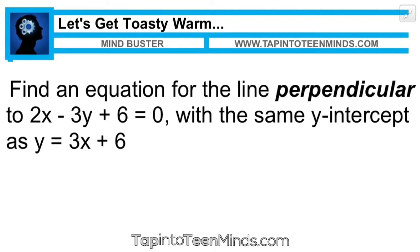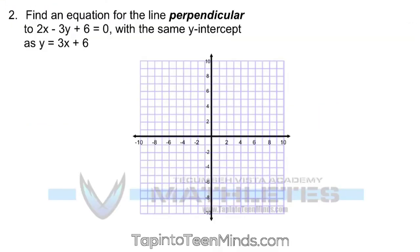Looking at the question, we're looking for an equation of a line that's perpendicular to the line given and also has the same y-intercept as a second line, this guy right here. So I think it's important that we visualize what this actually means. While it's not a requirement, it's probably a good idea to sketch yourself a visual of what this might look like.